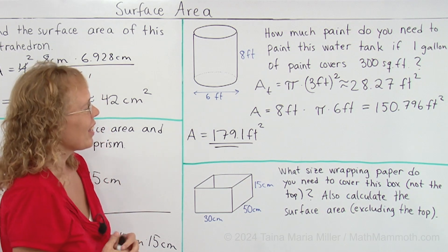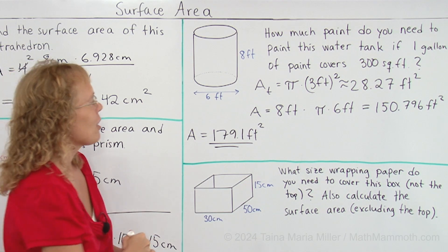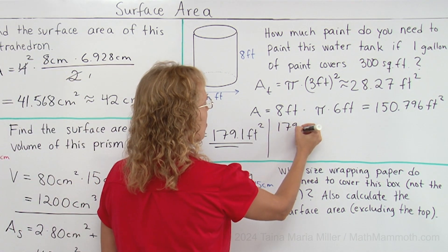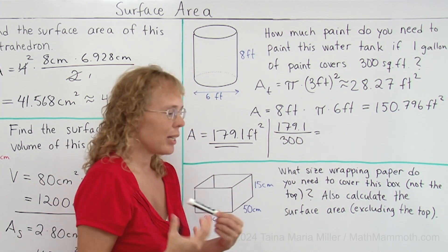Now how much paint do we need? We need a fraction of a gallon and to calculate what fraction of a gallon you need, you would take 179.1 divided by 300 and see what fraction we get, what decimal we get.